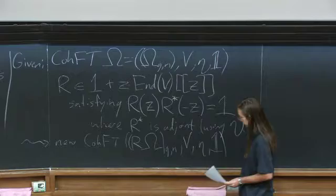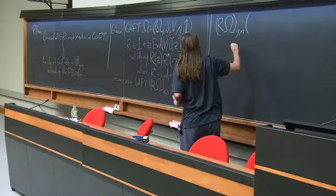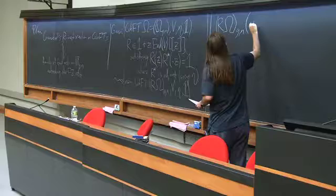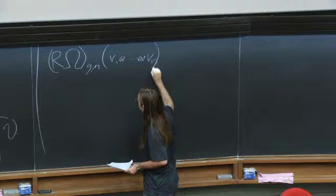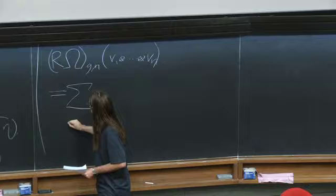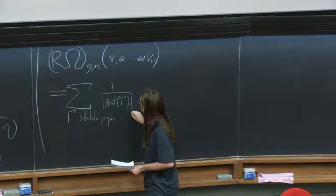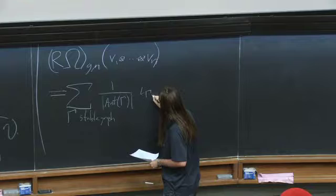The way in which this will be defined is a graph sum. I'll tell you what you get when you pick g, n and then pick n vectors V_1 through V_N to feed to it to get an actual cohomology class on M_{g,n}-bar. There's a big sum over gamma, a stable graph, with a factor of one over the automorphism group of gamma, and then an iota_{gamma,*}.